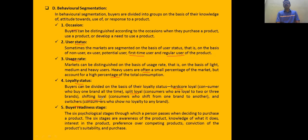For example, if I want only one specific news channel, I am a hardcore loyalist. If I follow multiple media channels, that is split loyalty. If I used to follow one channel in the past but now follow another, that is shifting loyalty. Switchers watch whatever news comes on any channel. Finally, buyer readiness stage — if the buyer is in genuine need of the product, all these distinctions matter less and the sale will proceed.